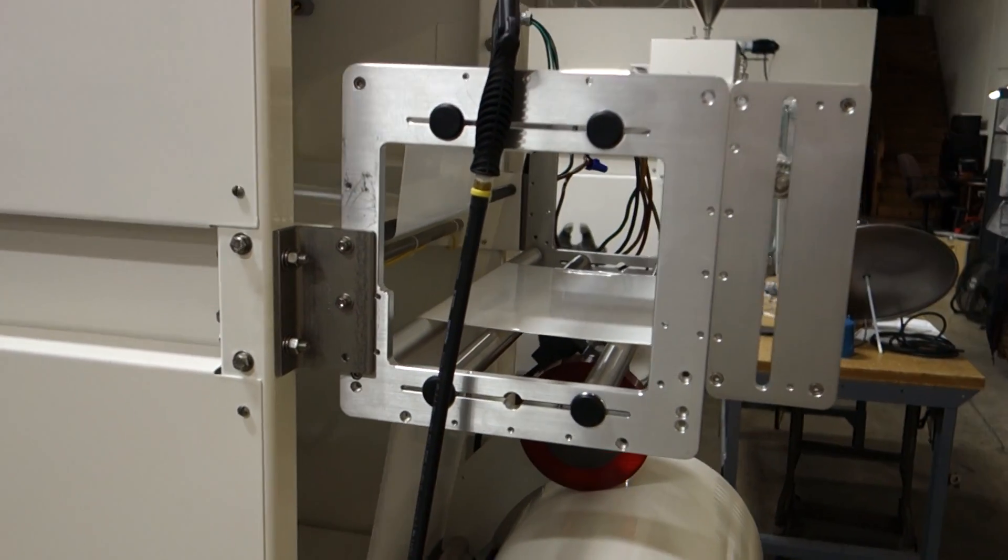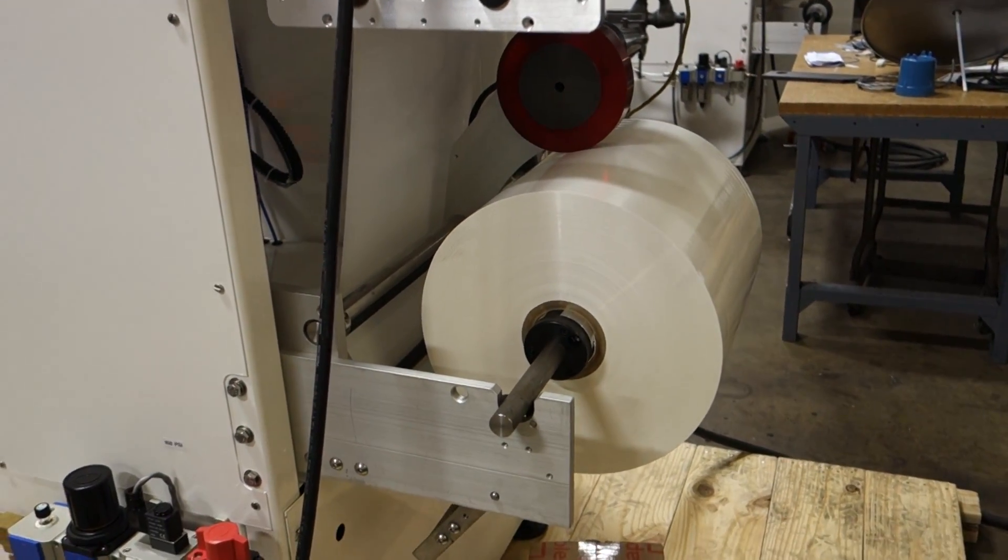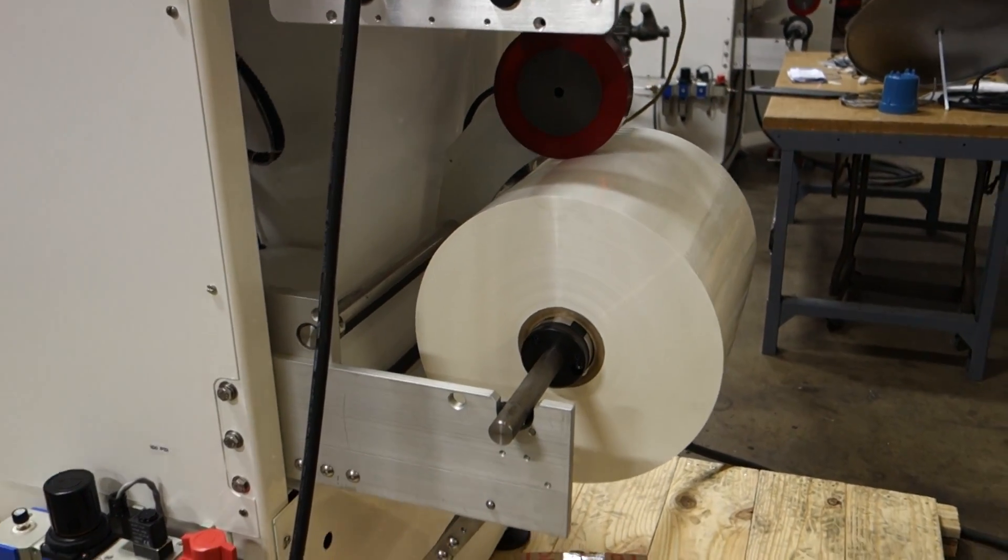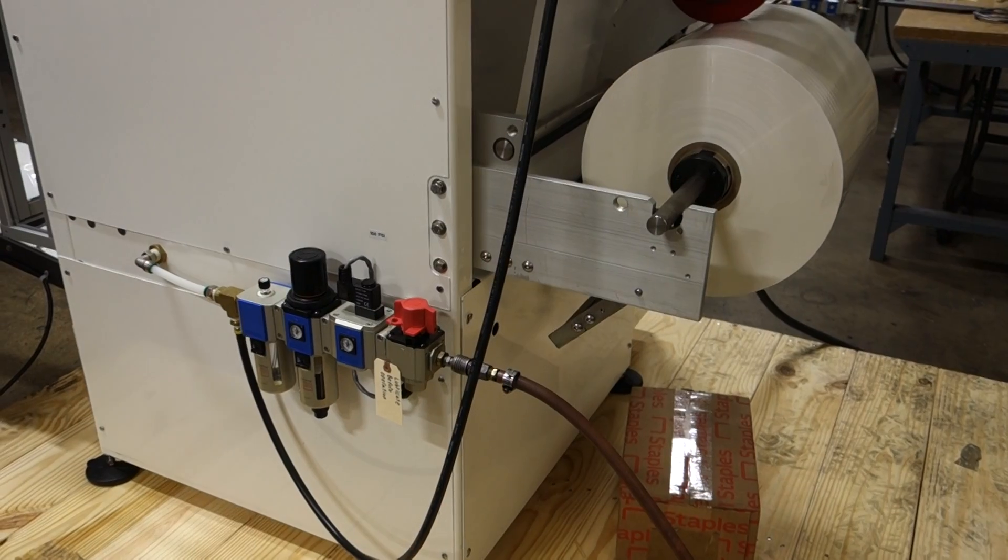This is the printer mounting bracket, the film roll unwind, the airline assembly. That's where you supply your airline.